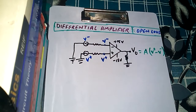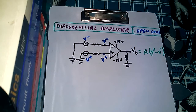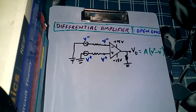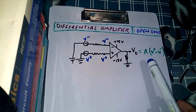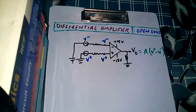Hello friends, this is Vidhan. Welcome to my channel. In our last video we had seen the differential amplifier circuit with open loop and with feedback — we saw the circuits and their output voltage formulas. In today's video we will again take the differential amplifier circuit, first with open loop and derive the output formula, and then with feedback and derive the output formula.